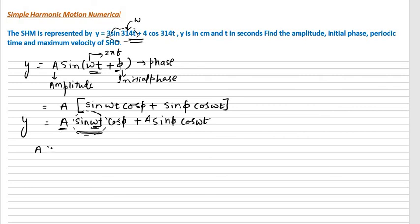Now again if I compare the second part, this is cos omega t part. The left over 4 is A sin phi. So A sin phi is equal to 4.